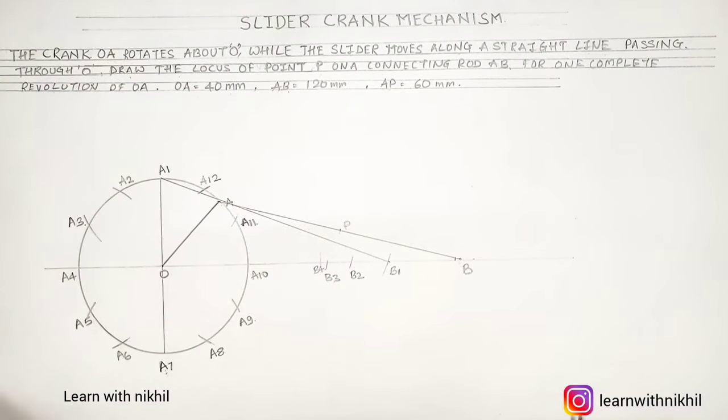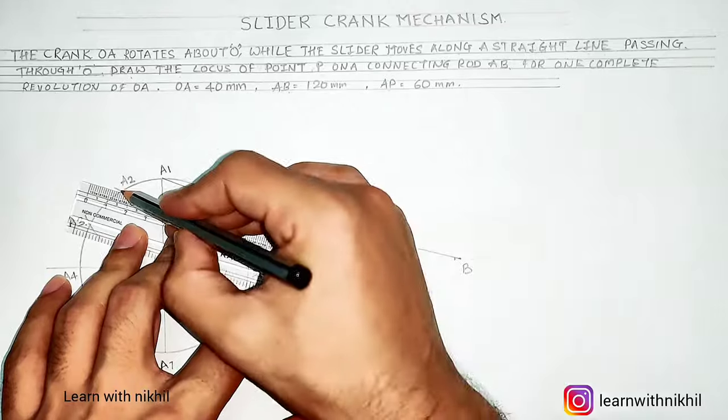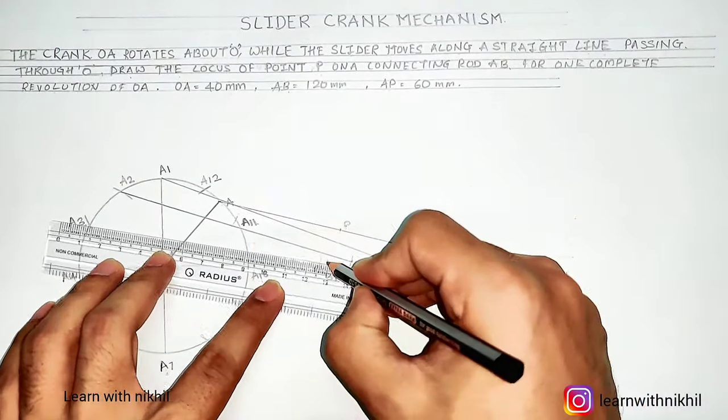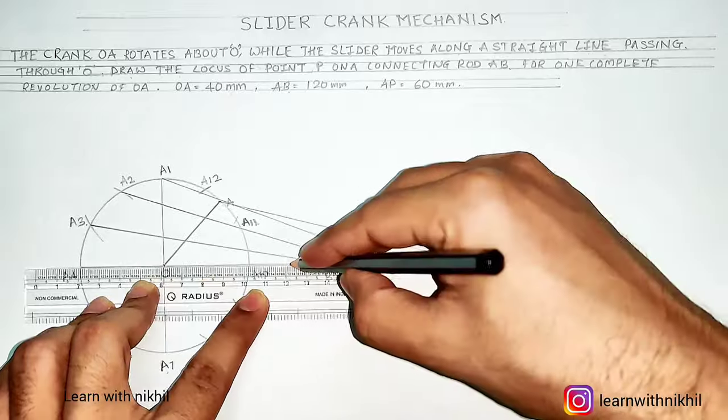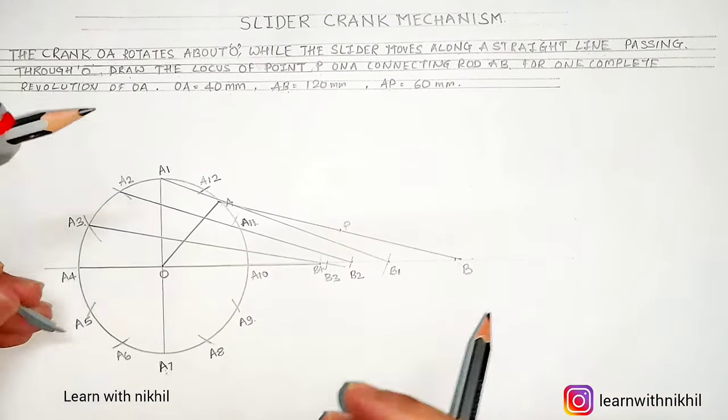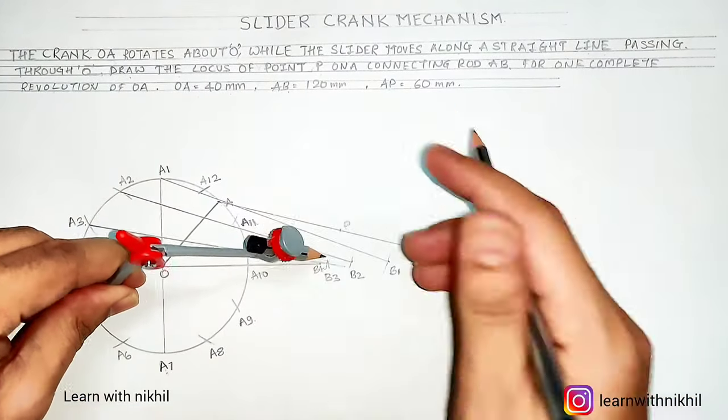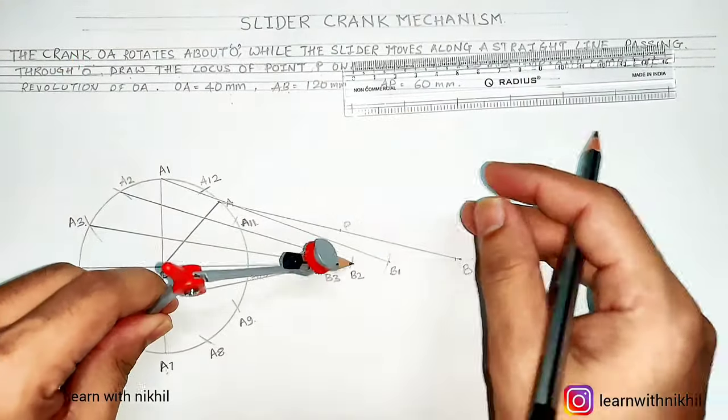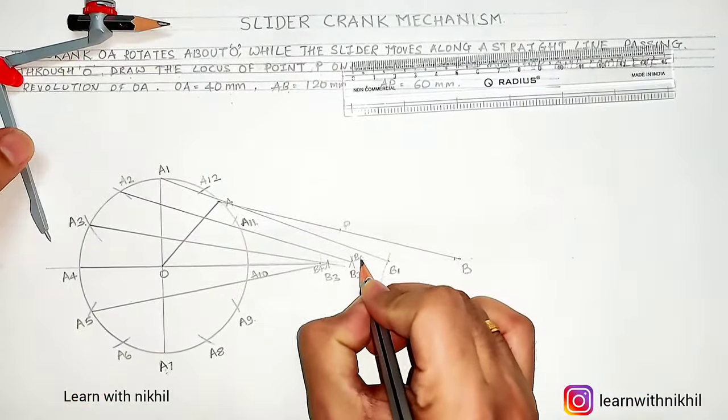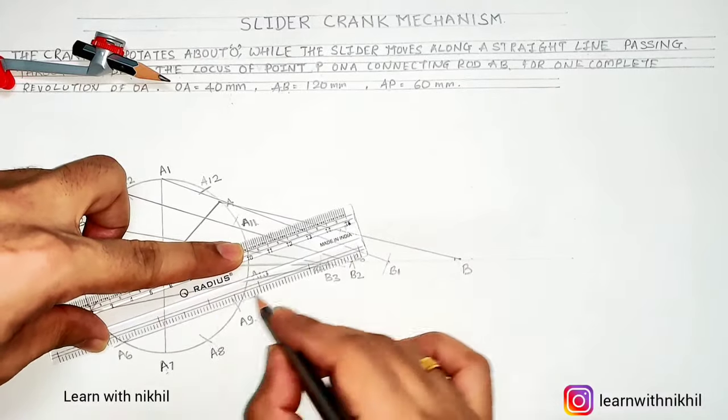Now doing this same thing for each and every point, for B2. Now when it is at A5, it will be at B5. Just while doing it, keep marking the lines because when much of the lines increase it will be confusion for you. Now when the point is at A5 we have the slider at B5, so keep doing this till A12.